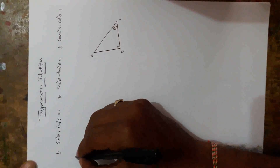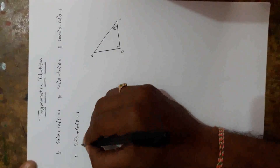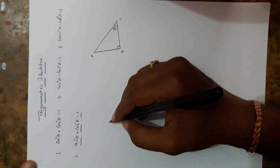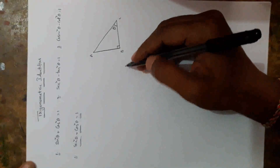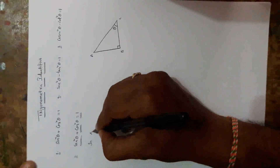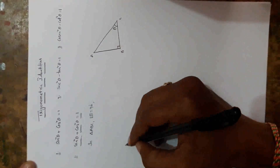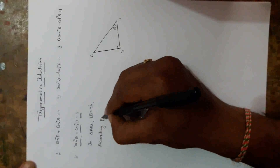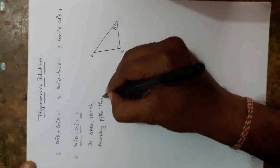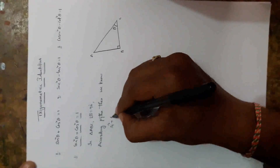Let us prove the first identity: sin squared theta plus cos squared theta is equal to 1. To prove this, we first need to know about the right-angle triangle and the Pythagoras theorem. In triangle ABC, angle B is equal to 90 degrees. According to the Pythagoras theorem, side 1 squared plus side 2 squared is equal to the hypotenuse squared.